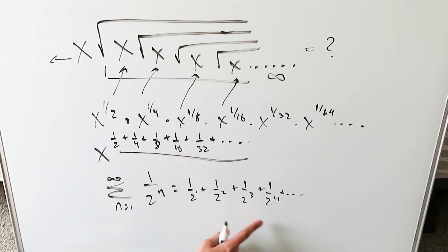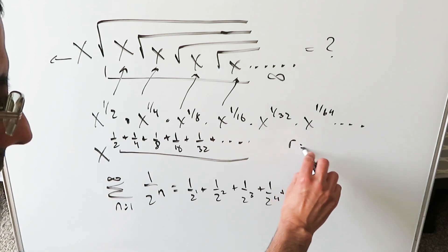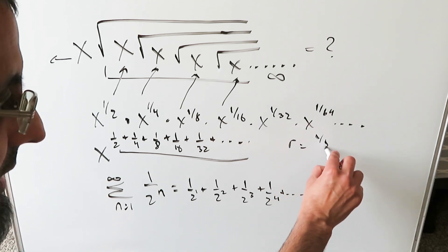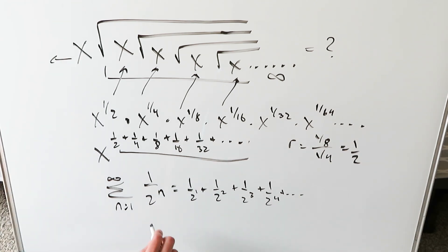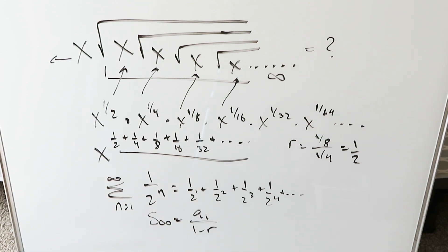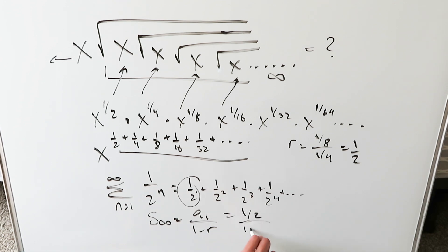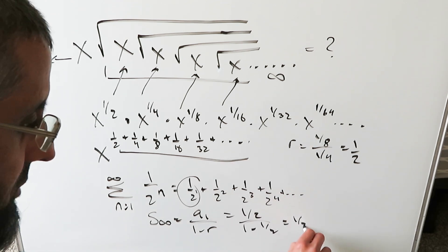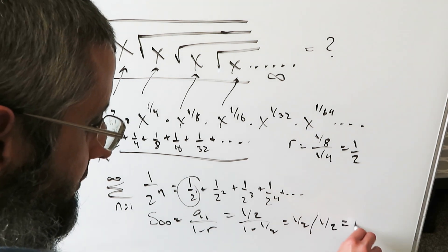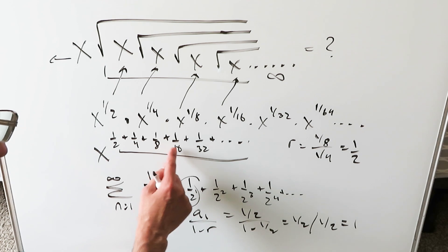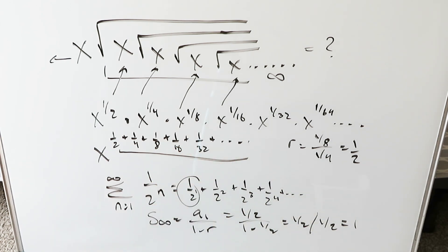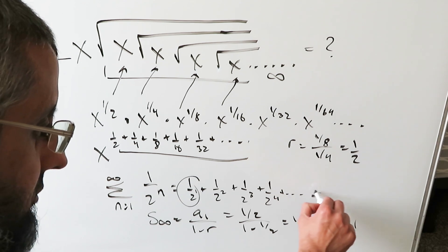An infinite geometric series. The common ratio is found by dividing one term by the term before it: 1 over 8 divided by 1 over 4 equals 1 over 2. To determine the sum of this infinite geometric series, there's a formula: first term divided by 1 minus the common ratio. The first term is 1 over 2, so I have 1 over 2 divided by 1 minus 1 over 2, which is 1 over 2 divided by 1 over 2, equal to 1. Add them up on your calculator — the value tends towards 1. All of that is equal to 1.